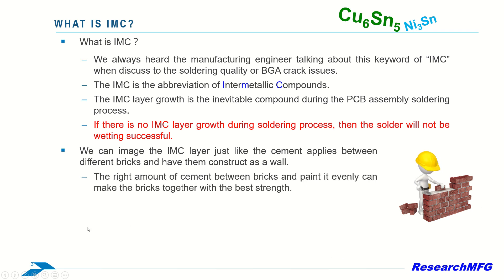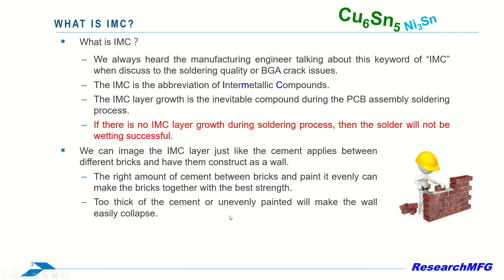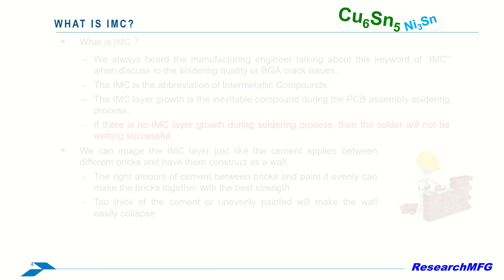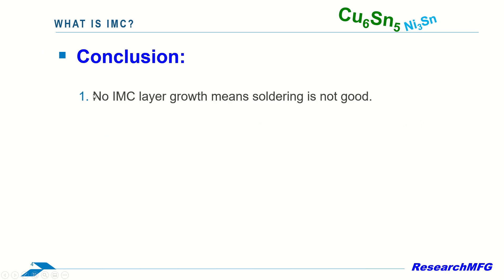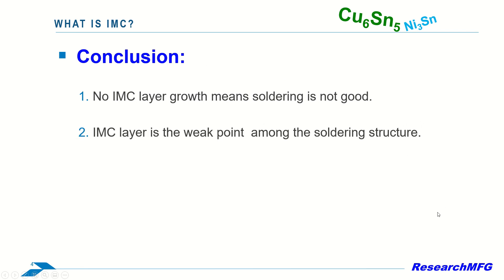The right amount of cement between bricks, applied evenly, can bond the bricks together with the best strength. Too thick or unevenly applied cement will make the wall collapse easily. In conclusion: 1. No IMC layer growth means soldering is not good. 2. The IMC layer is the weak point within the soldering structure.